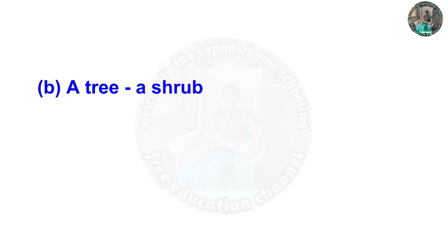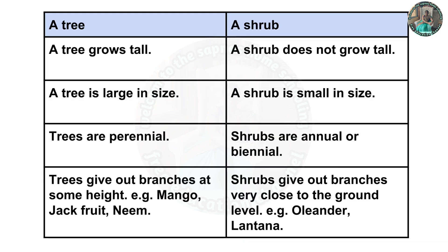B — difference between a tree and a shrub. First difference: a tree grows tall; a shrub does not grow tall. Second: a tree is large in size; a shrub is small in size. Third: trees are perennial; shrubs are annual or biannual. Fourth: trees give out branches at some height — example, mango, jackfruit, neem. Shrubs give out branches very close to the ground level — example, oleander and lantana.